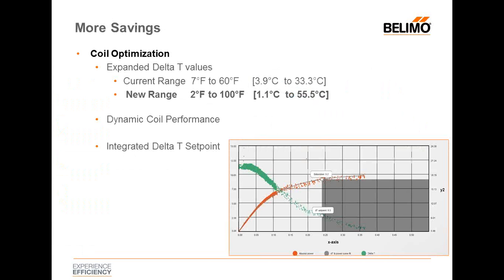Let's get into some of the core features for Energy Valve 3.0. At the core of the energy valve is coil optimization. We've expanded our delta T range, particularly on the higher end, going from 60°F all the way up to 100°F. We've had many requests from our Latin American market and for heat exchangers operating in the 70 or 80 degree delta T range. We've also had requests from colder environments needing higher delta T's for heating applications like condensing boilers, which typically have 90 to 100 degree delta T. This allows us to provide more savings on the heating side as well.